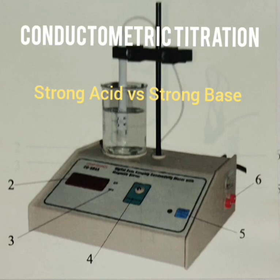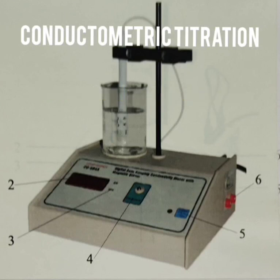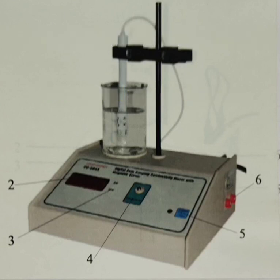In conductometric titration, the end point is determined by plotting a graph between measured conductivity and volume of NaOH added.